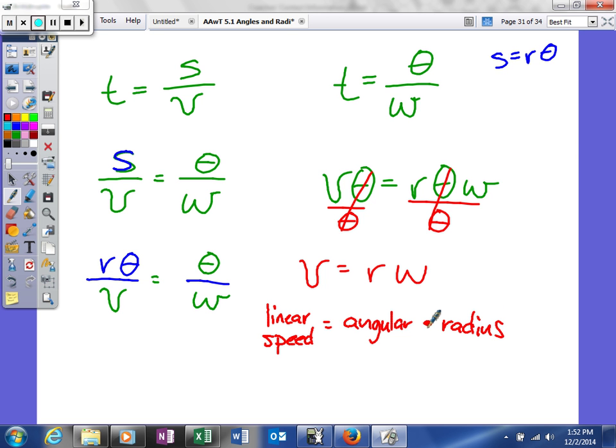Okay, so how quickly something travels when you're going around in a circle is basically it's dependent upon how far you are away from the center. So the longer the radius, the more distance something has to travel.